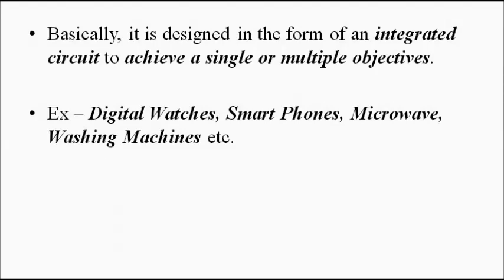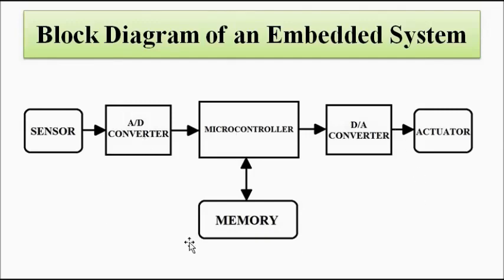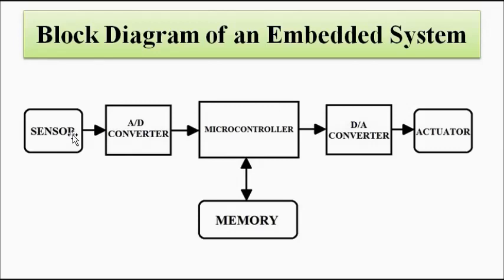The block diagram of an embedded system is something like this. It is very much similar to a sensor system, which we have discussed in sensors, transducers, and instrumentation. The block diagram involves hardware and software elements. Here we have only a single sensor shown, but it can consist of multiple sensors as we have discussed in wireless sensor networks. In reality, multiple sensors are used and the block diagram is very complex. You can think of it as multiple of these block diagrams connected one after another.